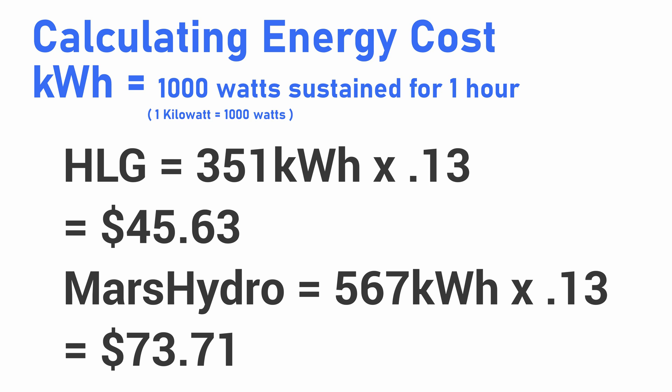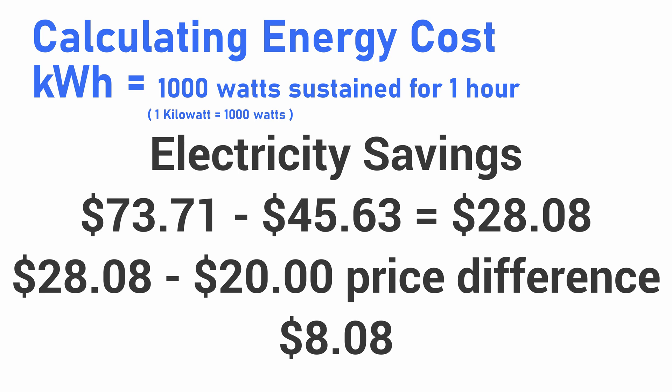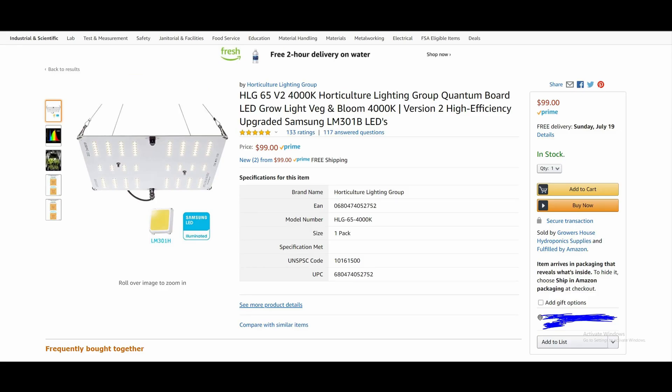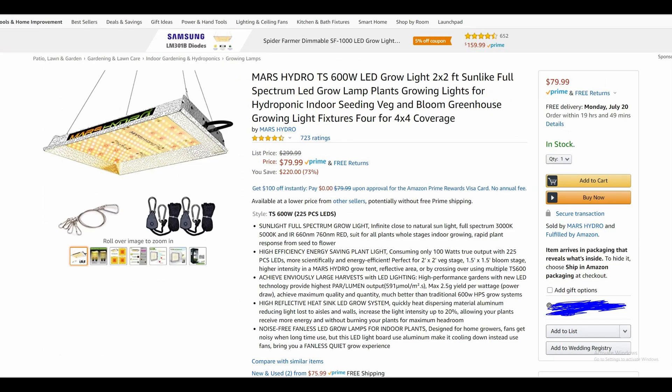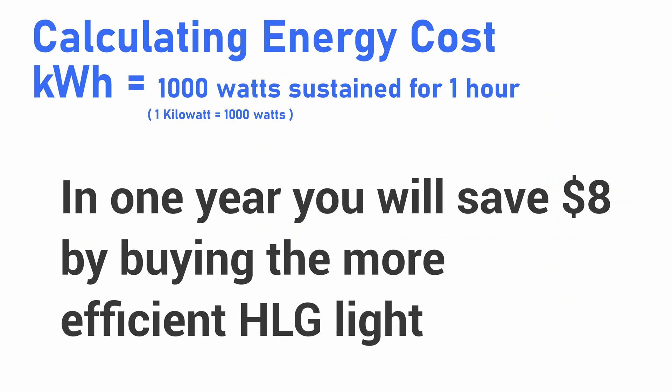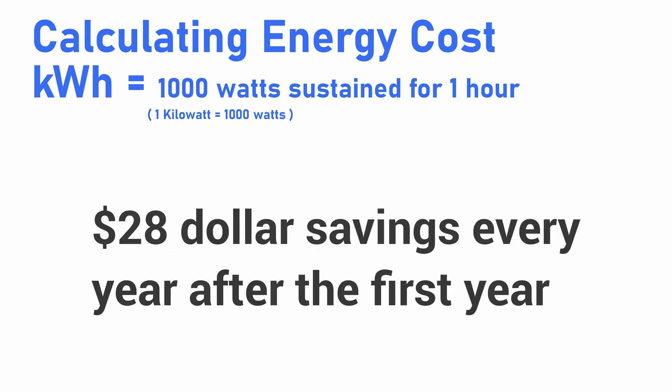From there we take our yearly kilowatt hours and multiply by $0.13 — our cost per kilowatt hour. For the HLG that comes to $45.63 per year, and for the Mars Hydro you're looking at $73.71 per year. That's a $28.08 savings. If you look at the Amazon prices, it will actually cost you more after one year of use to go with the Mars Hydro. By spending that extra $20 to get the better light, you'll have saved yourself $8.08 after year one, and every year after that you're saving a total of $28 compared to what you would have paid with the Mars Hydro.